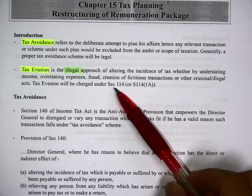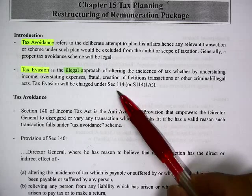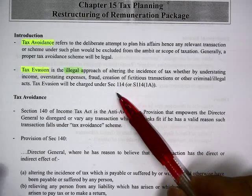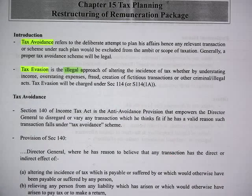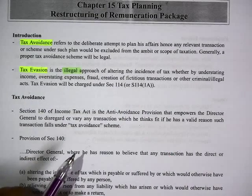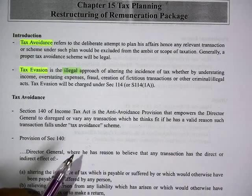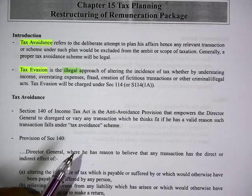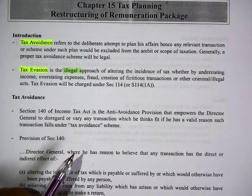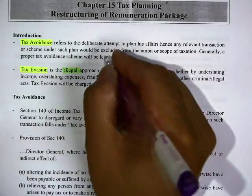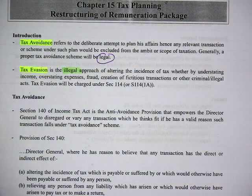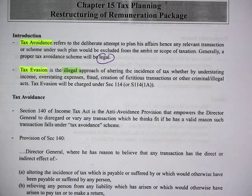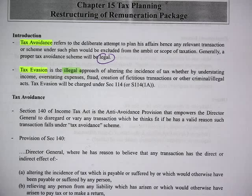Now a smart one doesn't have to evade taxes to save tax. The smarter one can avoid taxes to save tax, and the main difference is avoidance is legal — you cannot say they're wrong. So avoidance is a legal way. How do you avoid taxes? Basically, we try to exploit the loopholes of the law.